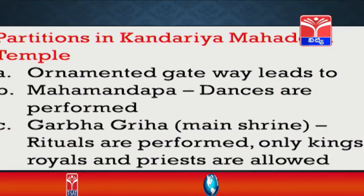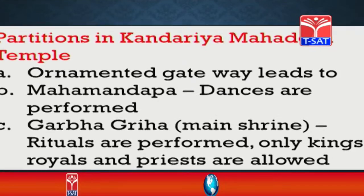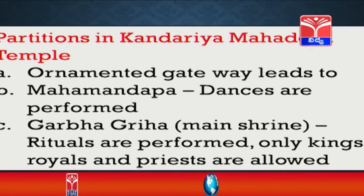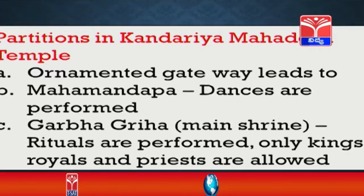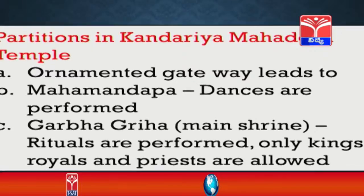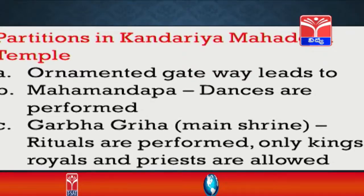The Kandarya Mahadeva temple has several partitions. The first is an ornamented gateway leading to the second part, the Mahamandapa, where dances are performed by devadasis or professional dancers. The third and main part is the Garbagriha, also known as the main shrine, where rituals are performed. Only kings, royals, and priests are allowed into the Garbagriha.